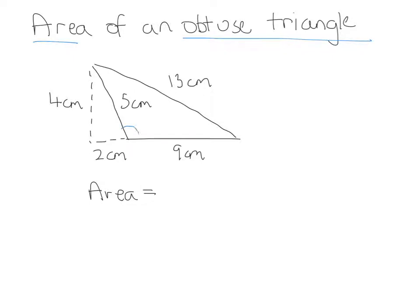Now here's our obtuse angle. That's why it's called an obtuse triangle, because it's got an obtuse angle, which is an angle greater than 90 degrees.